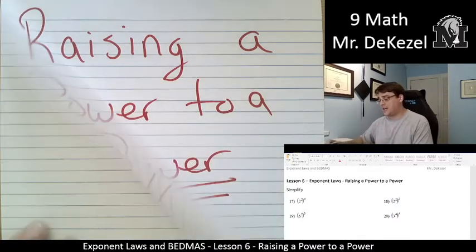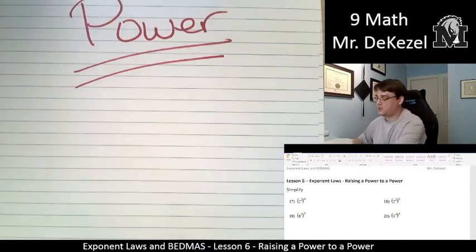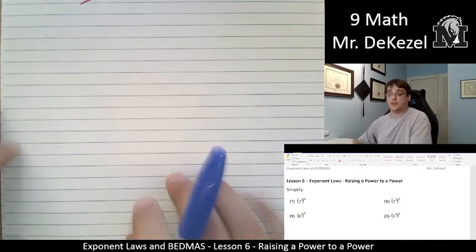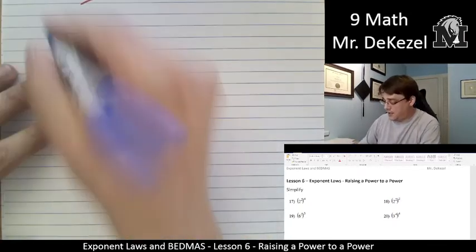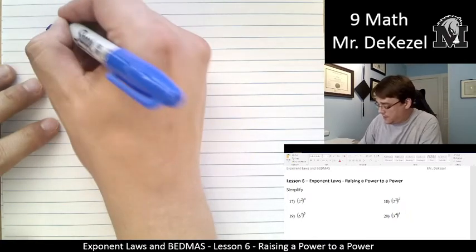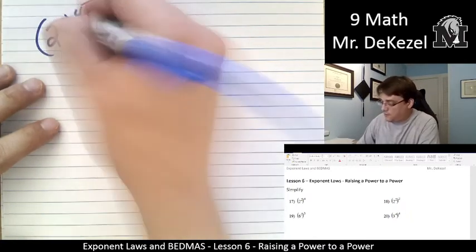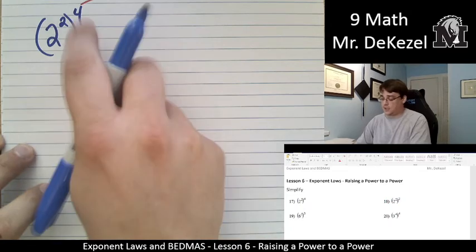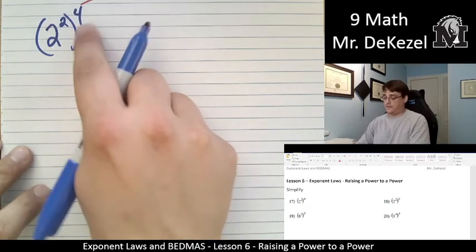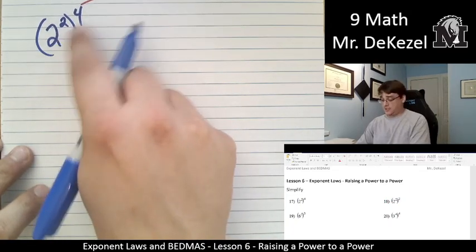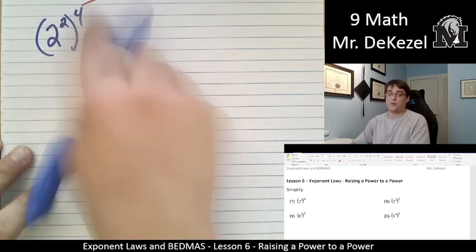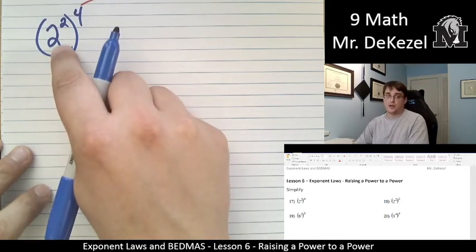Let's jump right into some examples. You have the questions. I have the questions. So we have 2 to the power of 2 raised to the power of 4. So this is what it means when it says we have a power of a power. So this exponent applies to this whole thing, and this is just a term in and of itself.